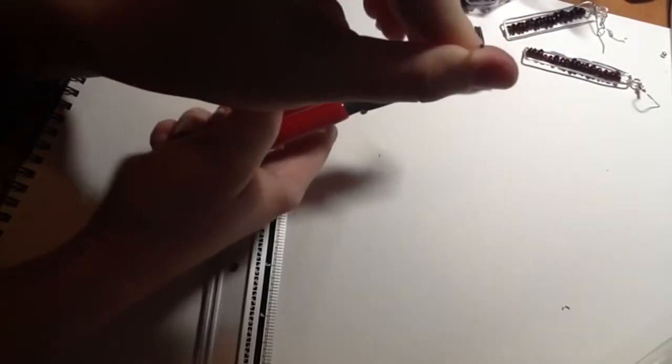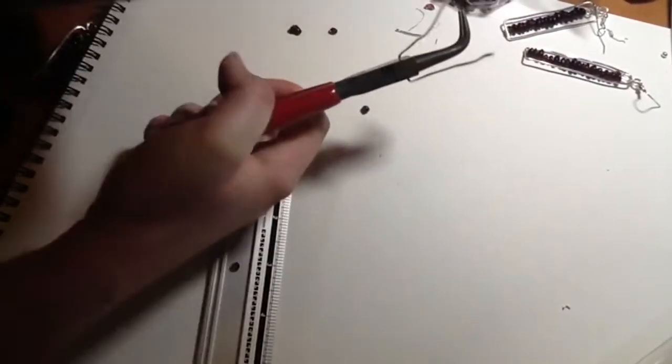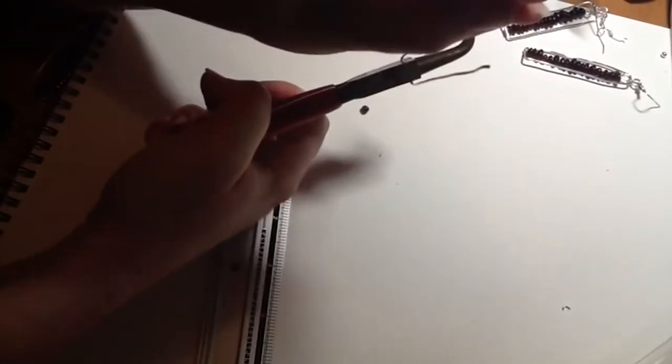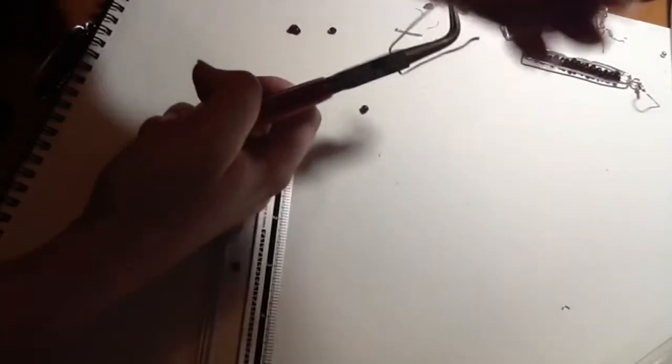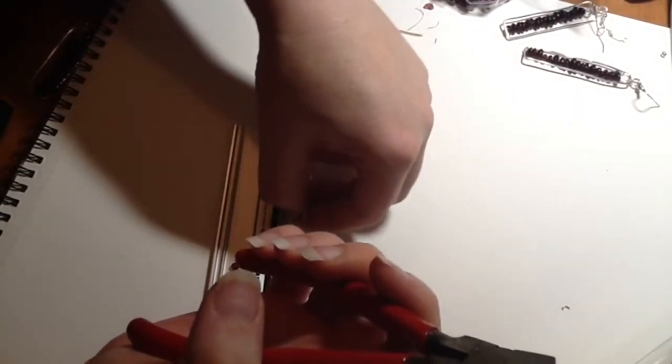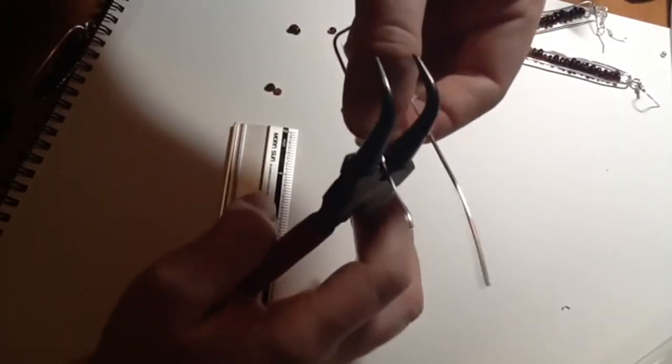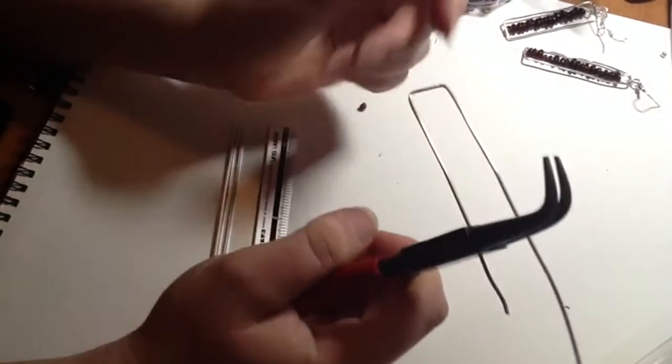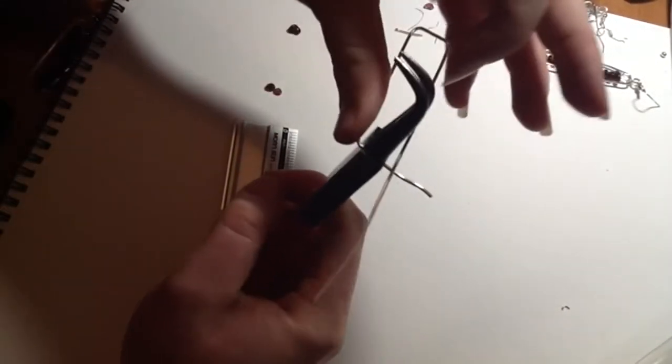Now what I'm going to do is make my loops in the top. So what I'm going to do is mark about two inches up from the bottom of my wire, and I'm just going to bend that wire over using again that flat part of my pliers.